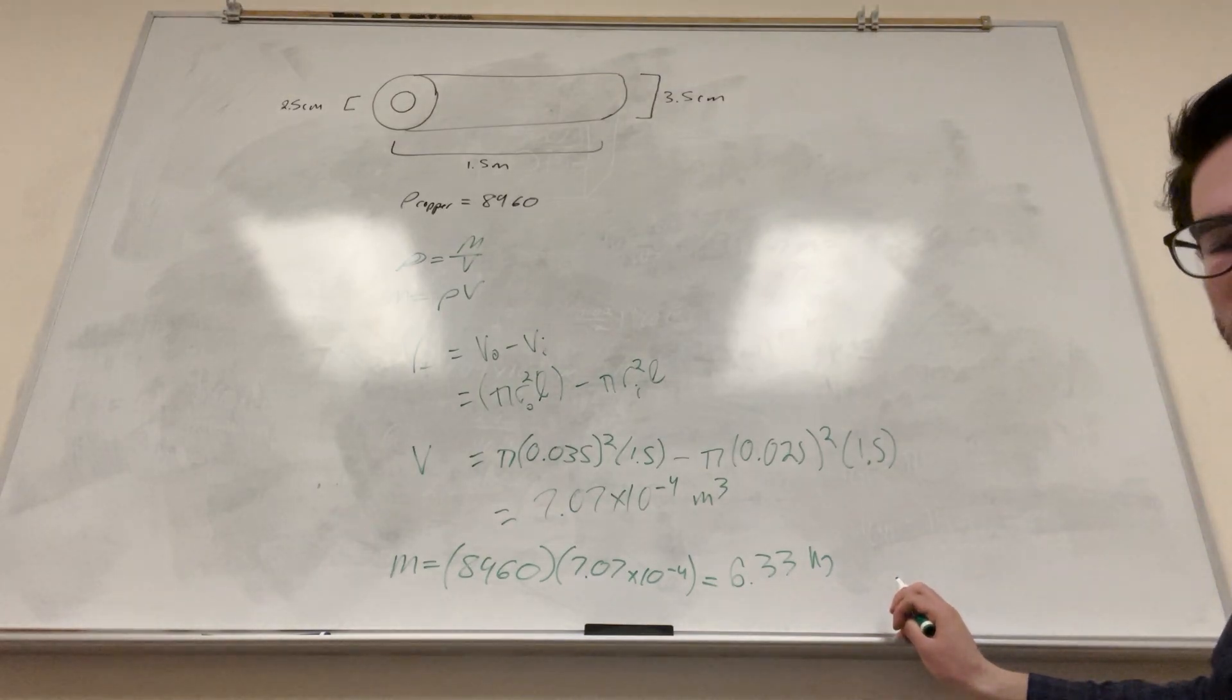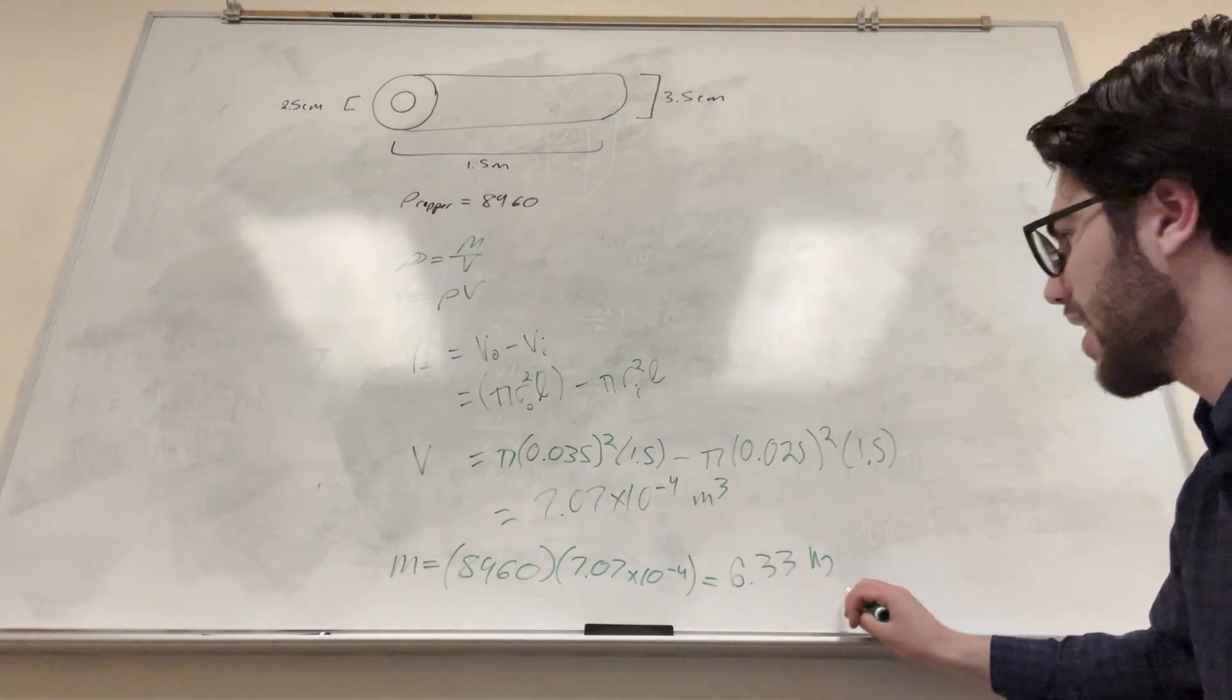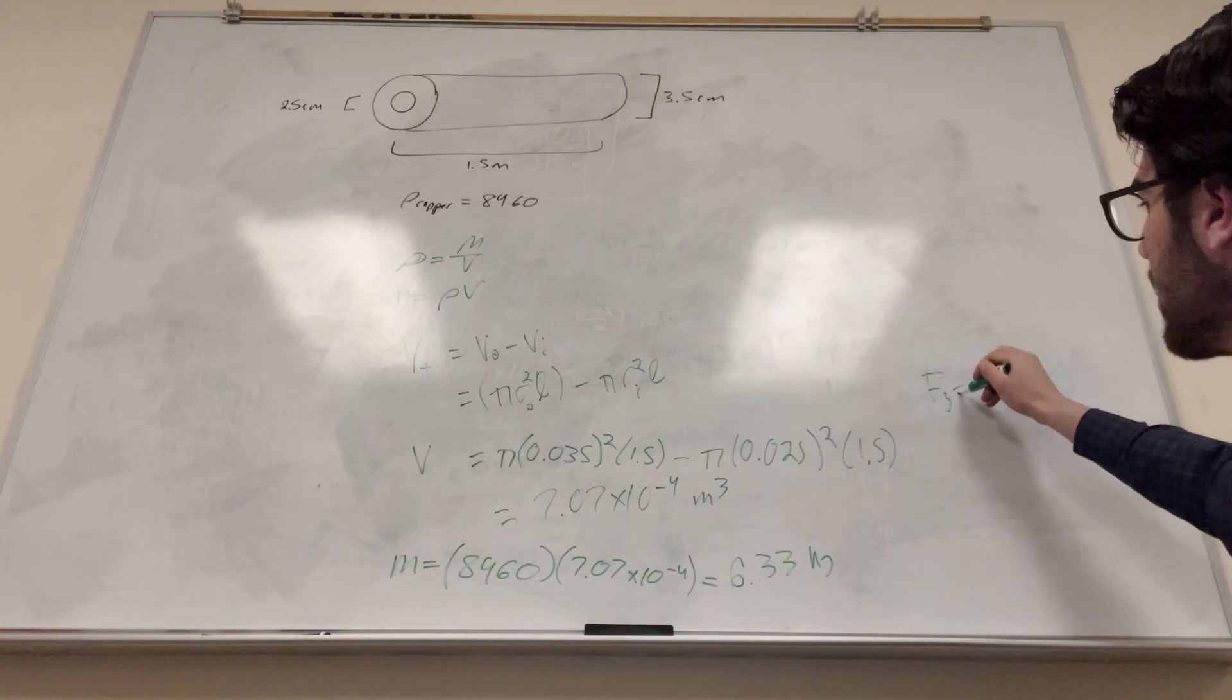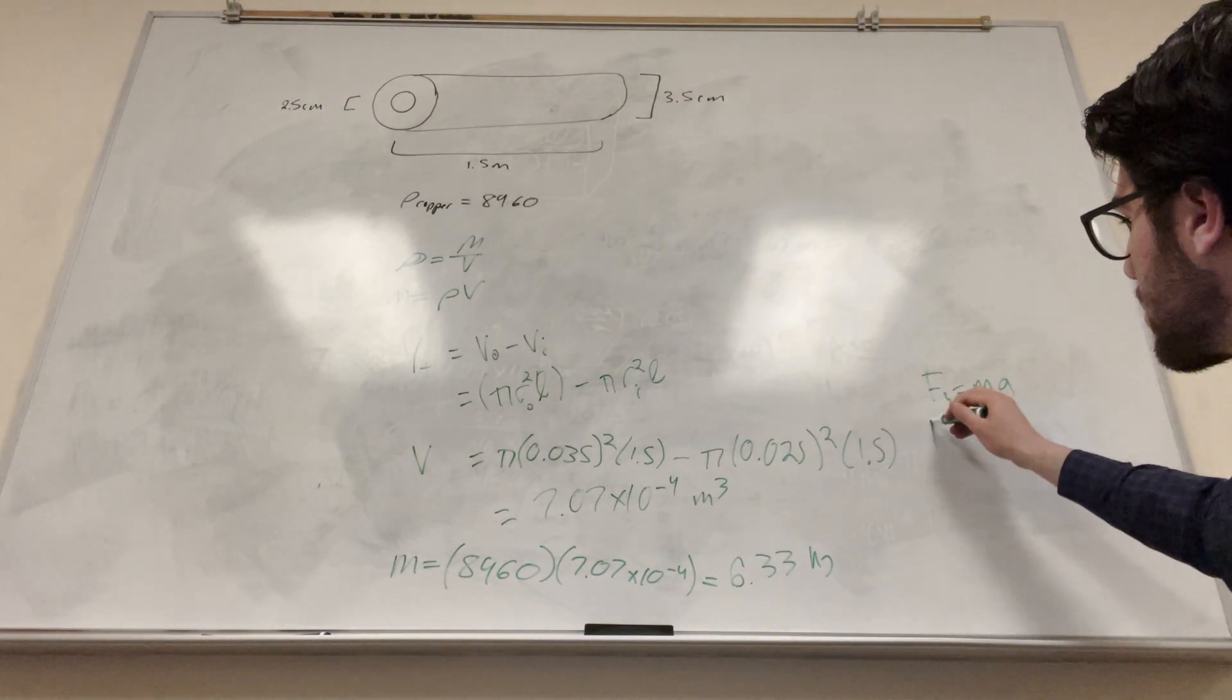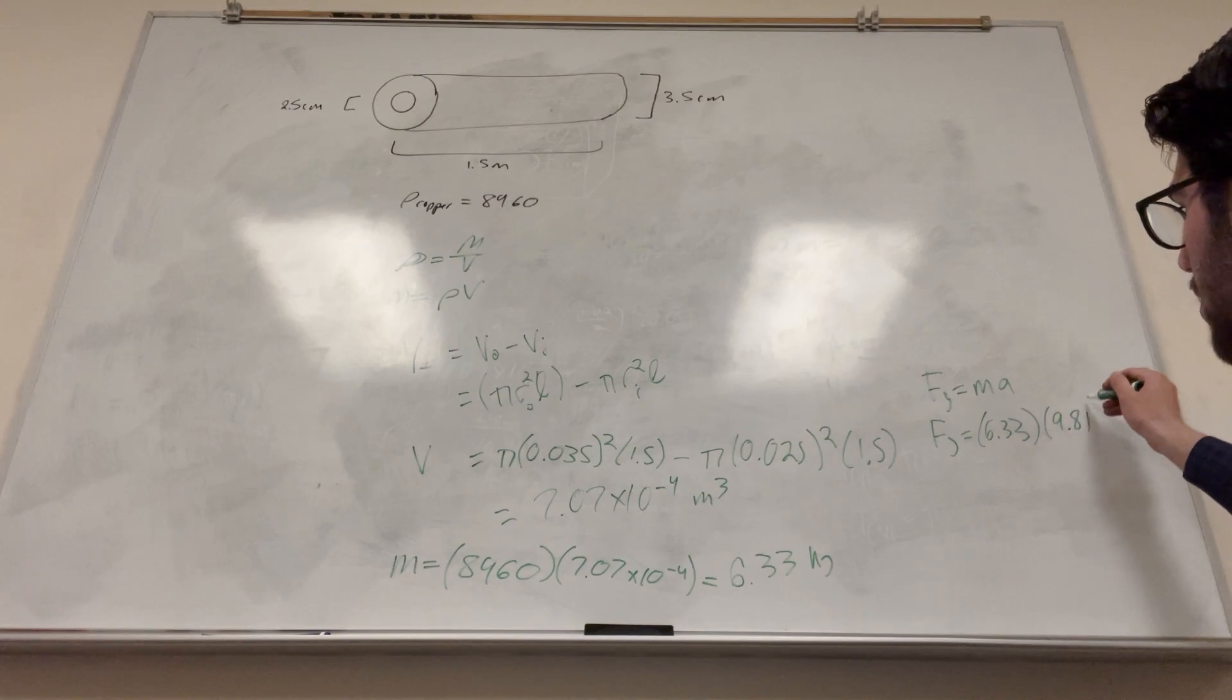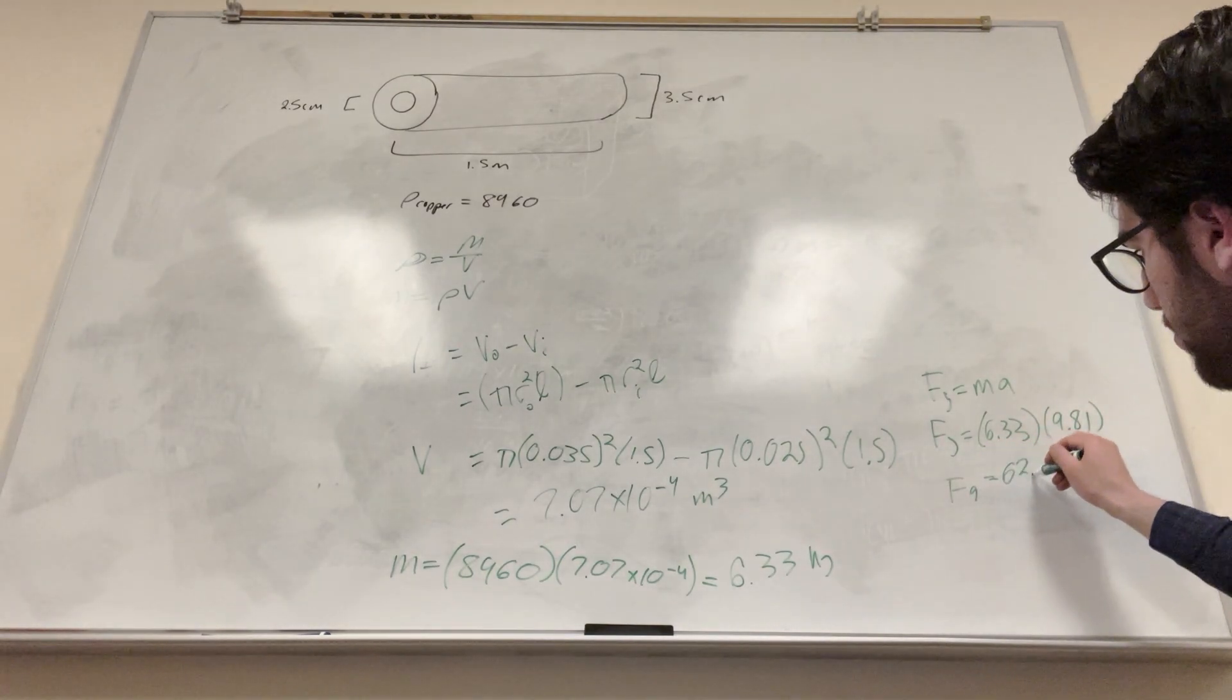That seems about right. Yeah, that seems like a good number. So we have it in kilograms, if you want to multiply it or if you want to get it to newtons, because sometimes it wants it in newtons. What you do is force of gravity is equal to mass times acceleration. So force of gravity is in newtons. So it is equal to the mass 6.33 kilograms times our acceleration of earth 9.81, and you're just going to get that it's equal to 62.1 newtons.